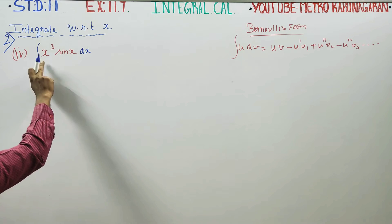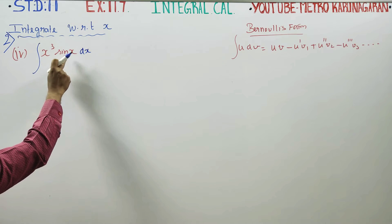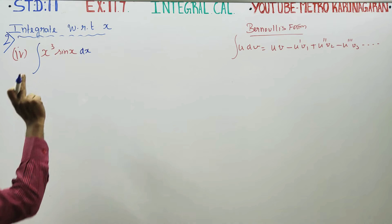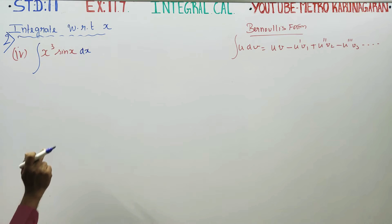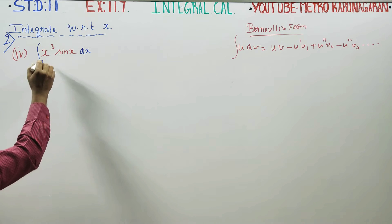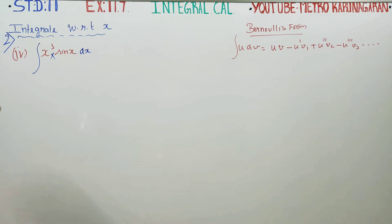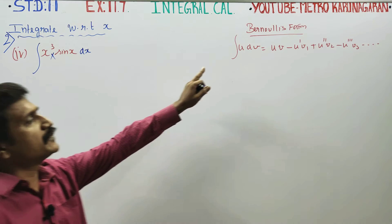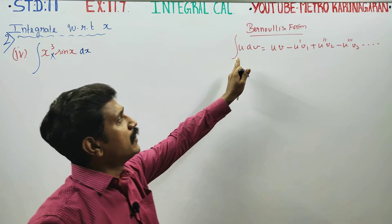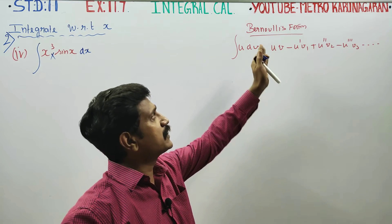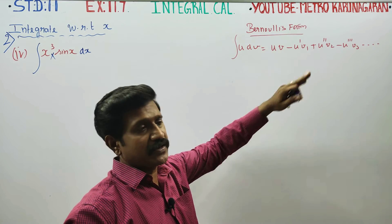It is a combined function. Because of that, the substitution method cannot be used. That is why the multiplication method is used — the UDV formula. Integration by parts, Bernoulli's formula.